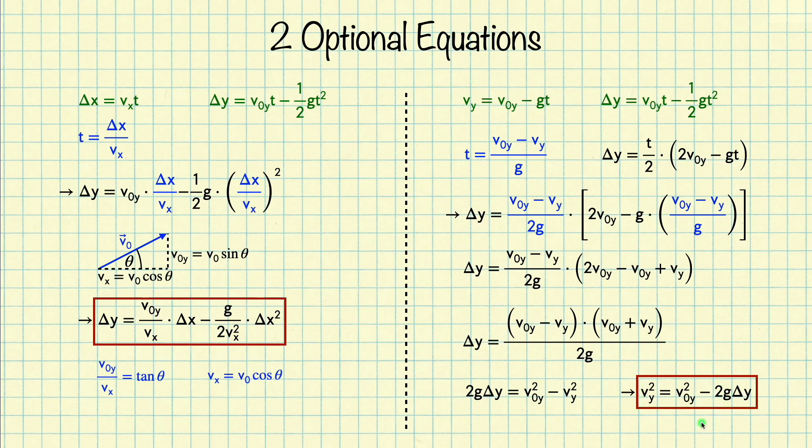this equation holds for a general acceleration. Remember that in our case we have the acceleration is equal to negative g, so for a general acceleration this would be v_0y squared plus 2a times delta y. Here we have that a equals negative g.